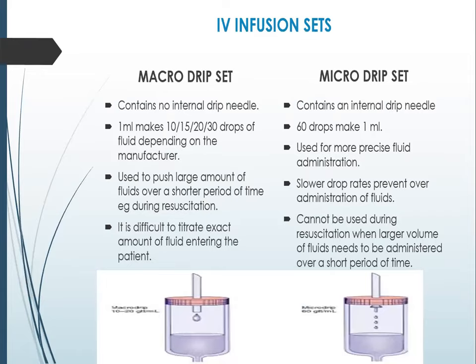Coming to IV infusion sets, there are two types available: macro drip set and micro drip set. The macro drip set contains no internal drip needle, while a micro drip set contains an internal drip needle. For a macro drip set, depending on the manufacturer, 1 ml makes either 10, 15, 20, or 30 drops. For a micro drip set, 1 ml always makes 60 drops. Macro drip sets are used to push larger amounts of fluid over a shorter period of time, such as during resuscitation. Micro drip sets are used for more precise fluid administration, as slower drop rates prevent over-administration of fluids.